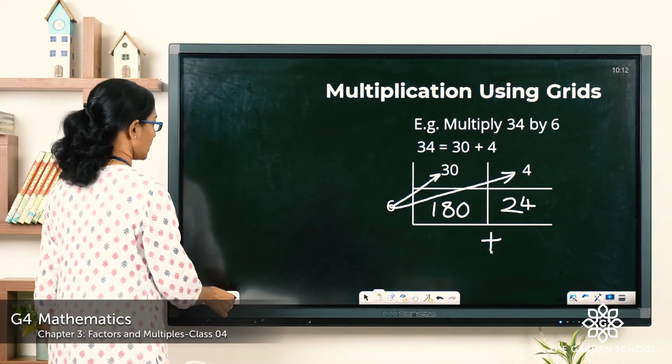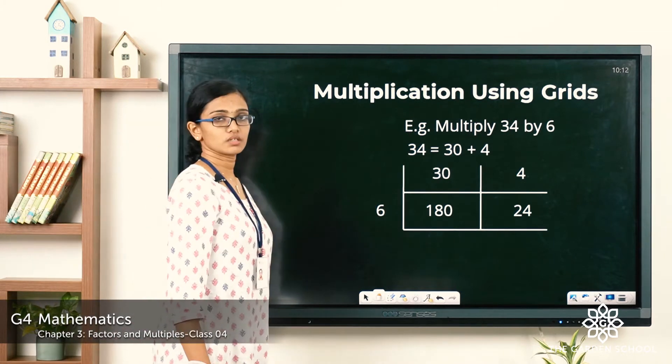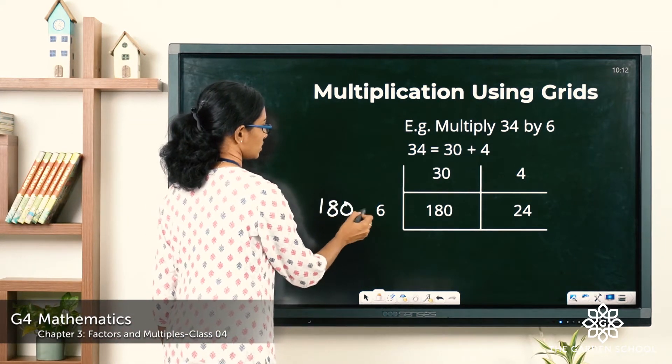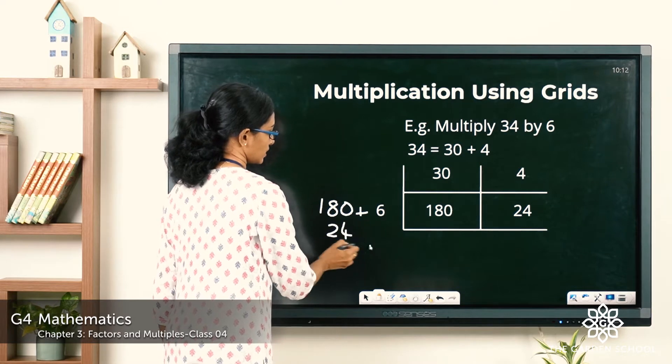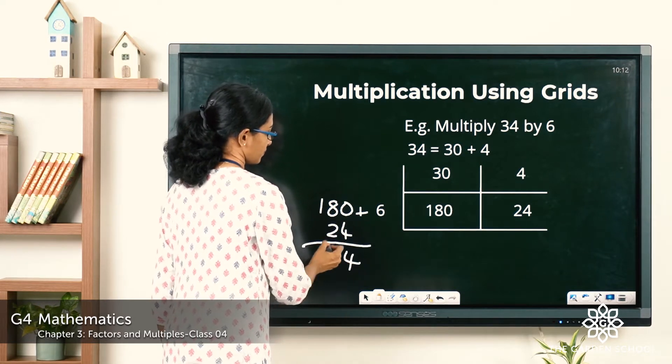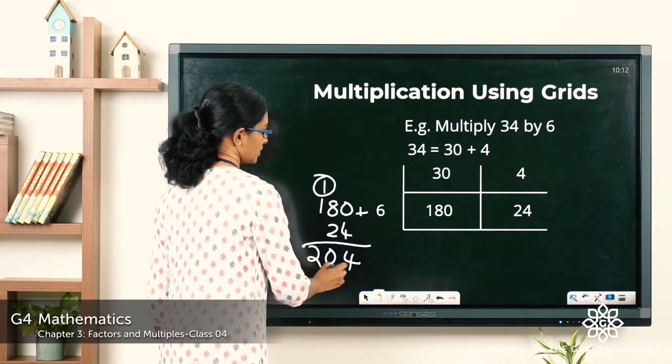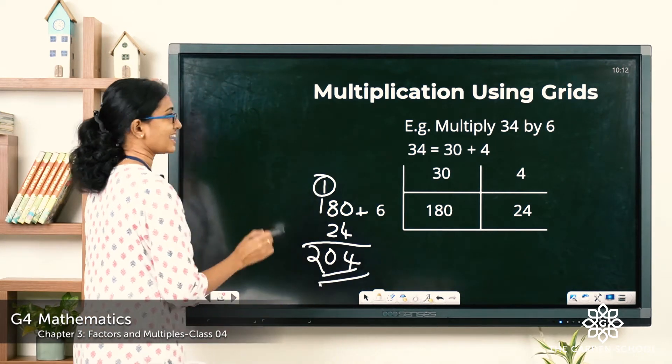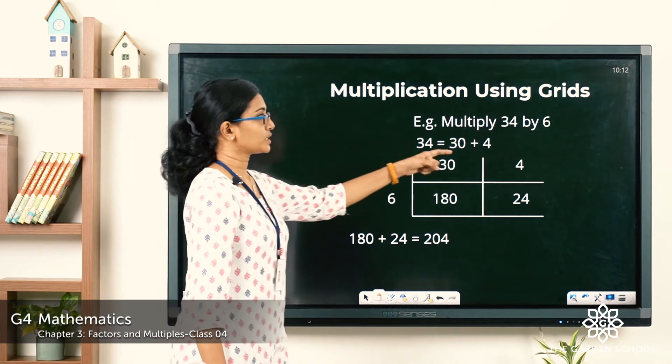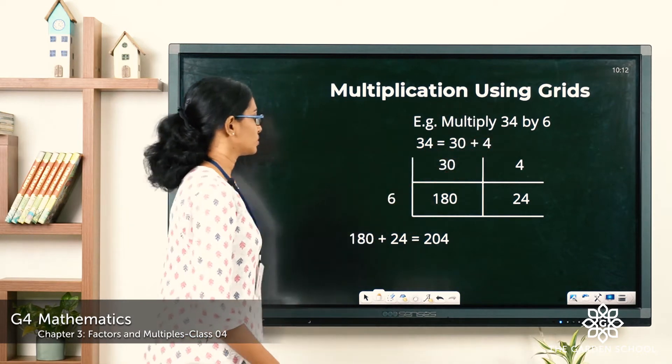So we are going to add 180 plus 24. What is 180 plus 24? 180 plus 24 is equal to 204. So that will be the answer to 34 into 6.